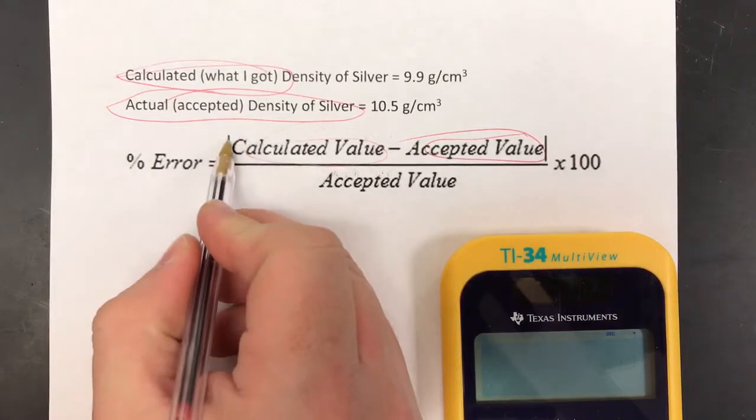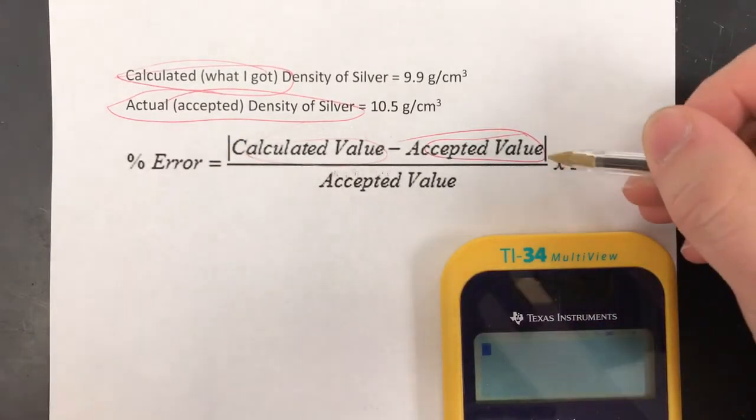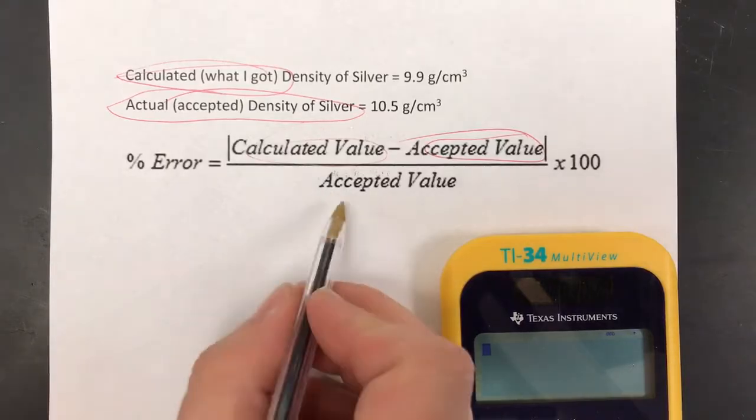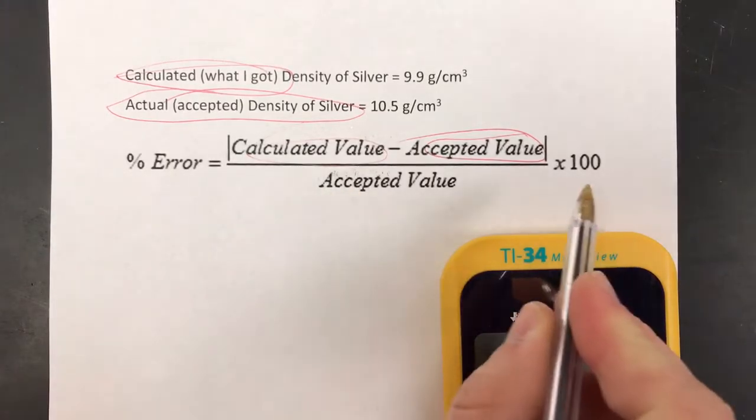You'll notice that this top part of the fraction here is in absolute value bars. That means it's always going to be positive regardless of how you subtract it. You're going to divide that whole thing by the accepted value times a hundred.